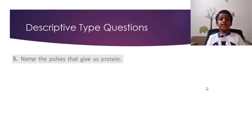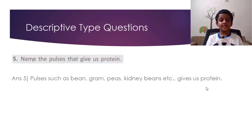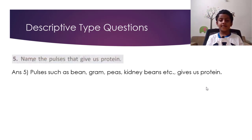Question 5: Name the pulses that give us protein. The answer is: pulses such as beans, gram, peas, kidney beans, etc. give us protein.